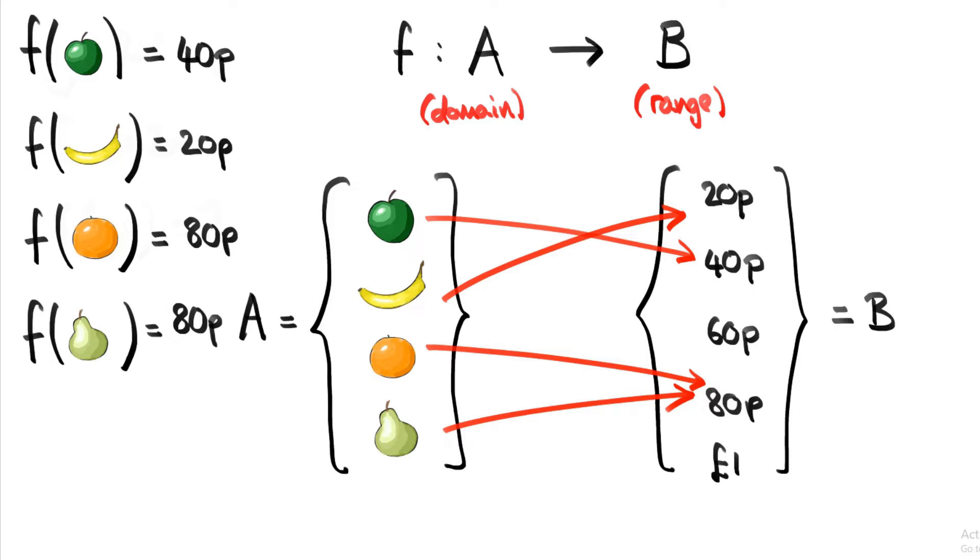And also, there are some lonely elements in B that don't have any arrows pointing towards them. That's fine, we don't necessarily have to have a fruit that costs 60p or one pound. But we did say every element in A has to have an arrow pointing away from it. Alright, brilliant. So now we have an idea of what a function really is.